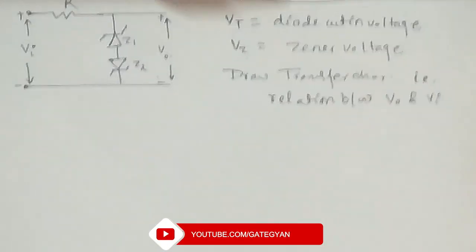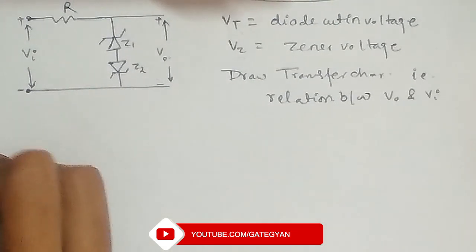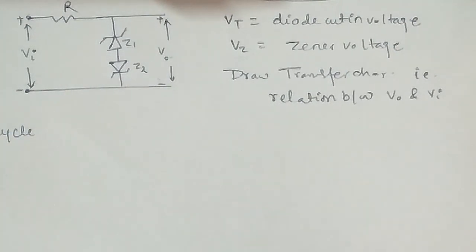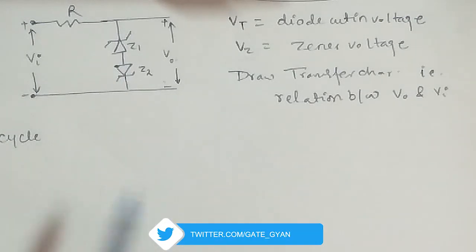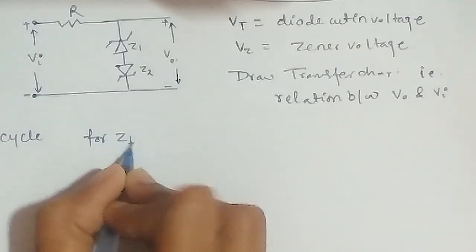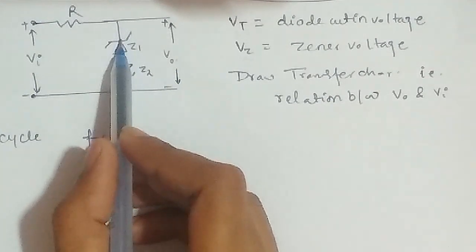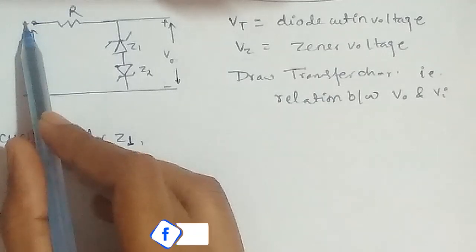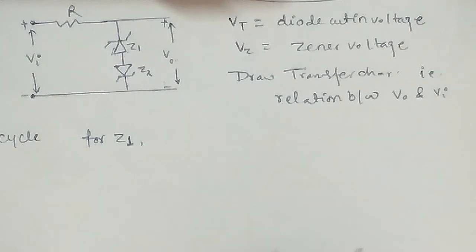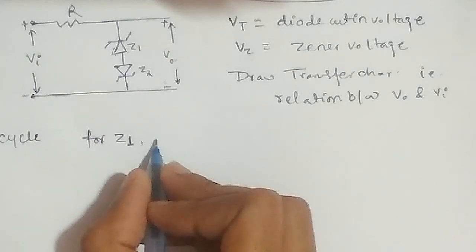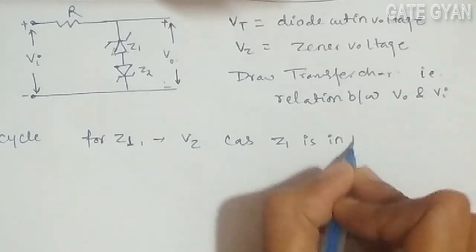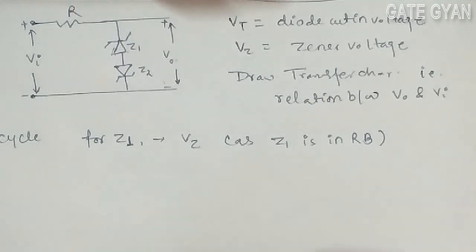So what we will do — we will analyze the positive half cycle. For Z1, as the negative terminal is connected to the positive end of the input, Z1 will be in reverse bias. In reverse bias, if it is in the breakdown region, the voltage will be VZ. So for Z1, the voltage will become VZ, as Z1 is in reverse bias and in breakdown.